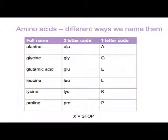Glycine is GLY in the three-letter code, or G in the one-letter code. Glutamic acid is GLU, or E. Leucine is LEU, or L. Lysine is LYS, or K. Proline is PRO, or P. And if you see an X, this means stop — the protein sequence is shorter than it should be, because there is a mutation that prevents any more amino acids being added to the protein chain.